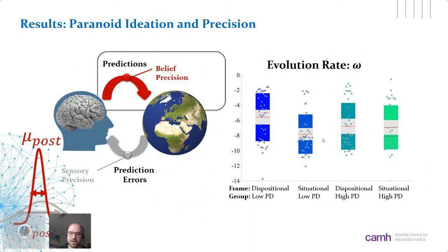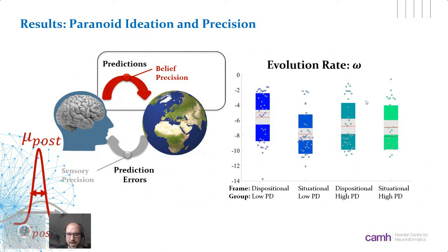The vanilla HGF won the model comparison here. They found an interesting interaction between group and frame on the parameter omega-2. In the low-paranoia group, participants updated their beliefs more under the dispositional frame and less under the situational frame — showing adaptive regulation of learning rate by context. In the high-paranoia group, the learning rate was identical across both conditions and overall lower, reflecting an increased reliance on prediction rather than updating from new evidence.